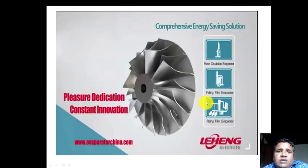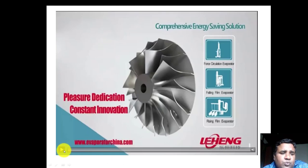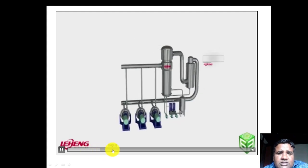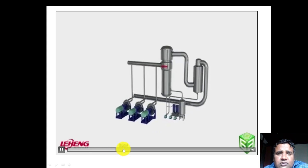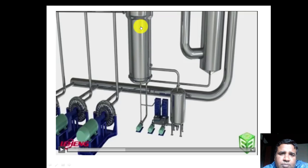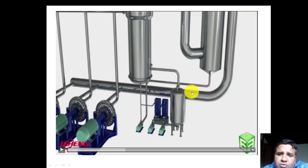Before moving on, let's play a video to understand the rising film evaporator more clearly. In the video, the blue line indicates feed being introduced inside the rising film evaporator body. This is the rising film evaporator, and this is the separator which separates the product. From the top, vapors have been recirculated, compressed, and fed back again.